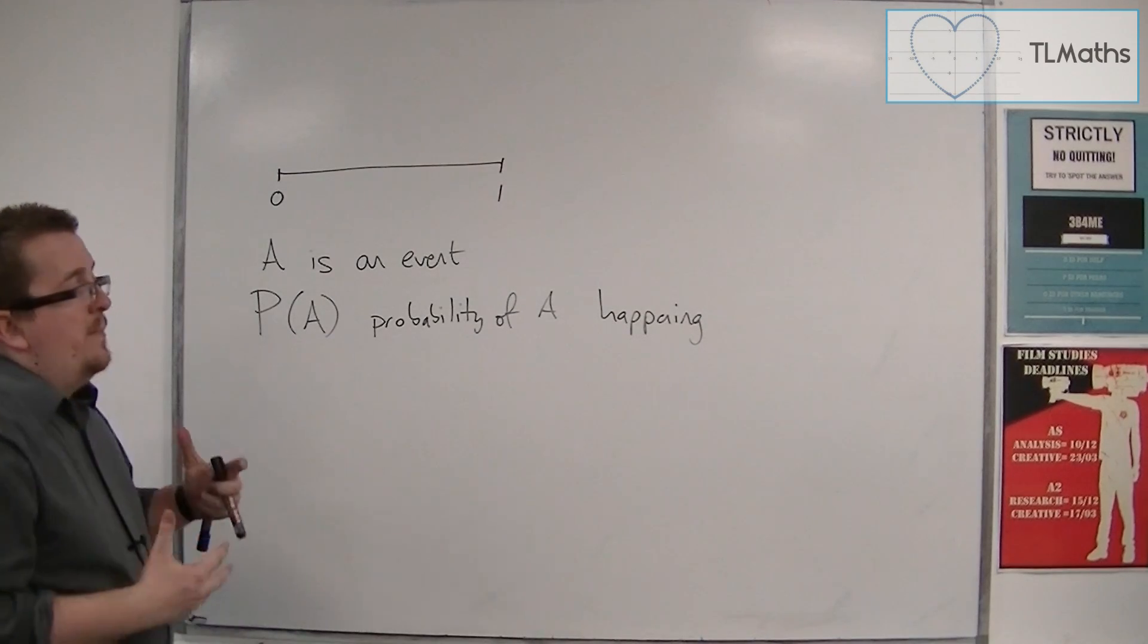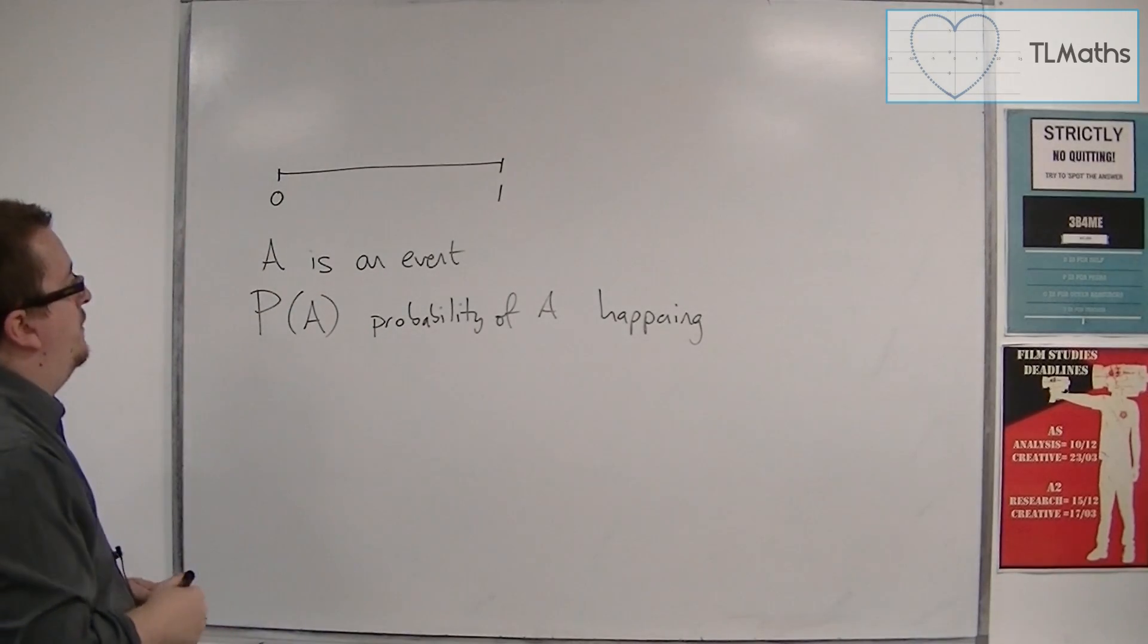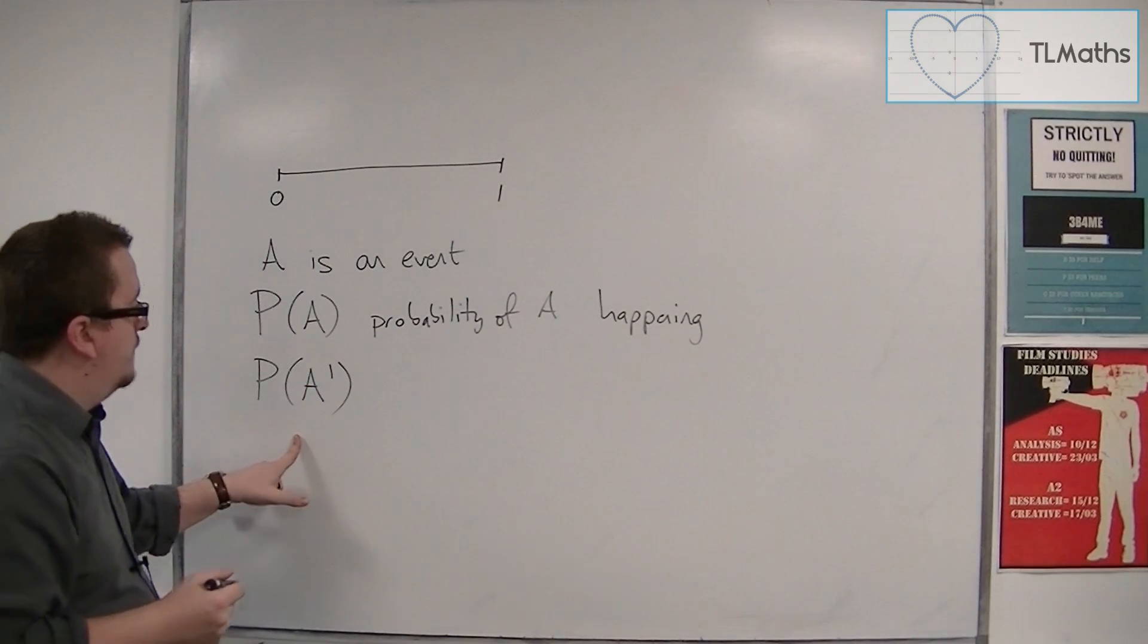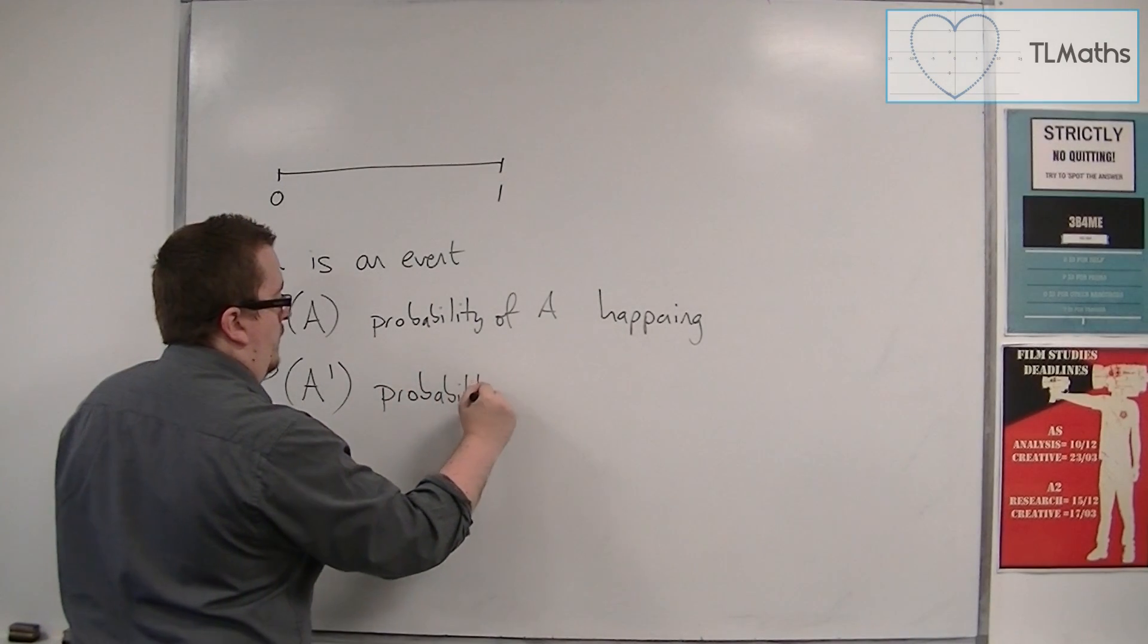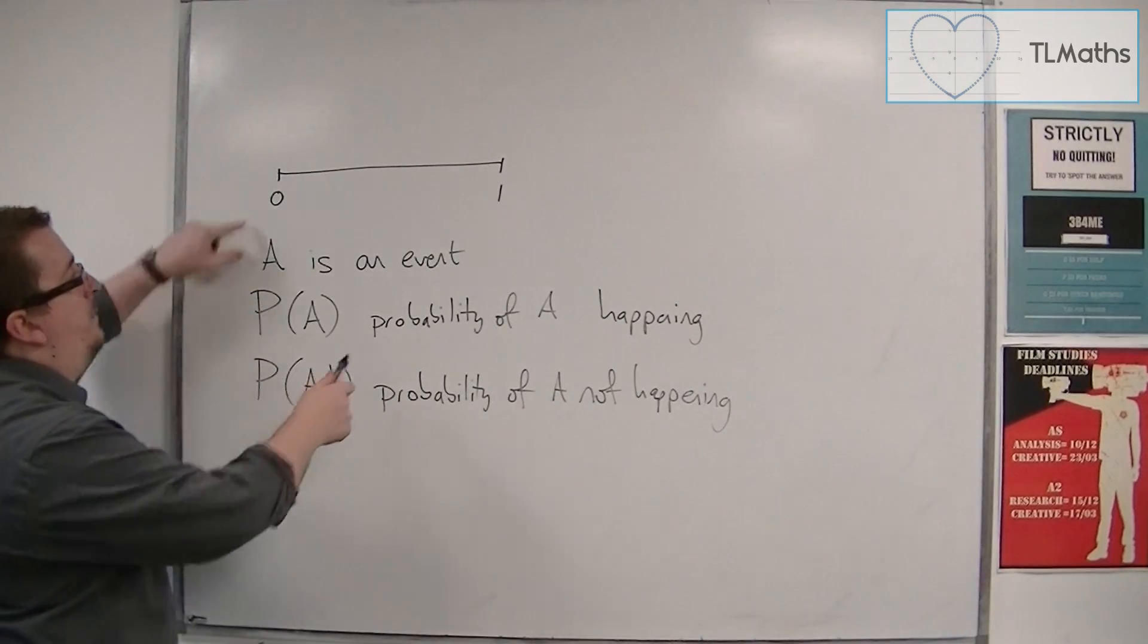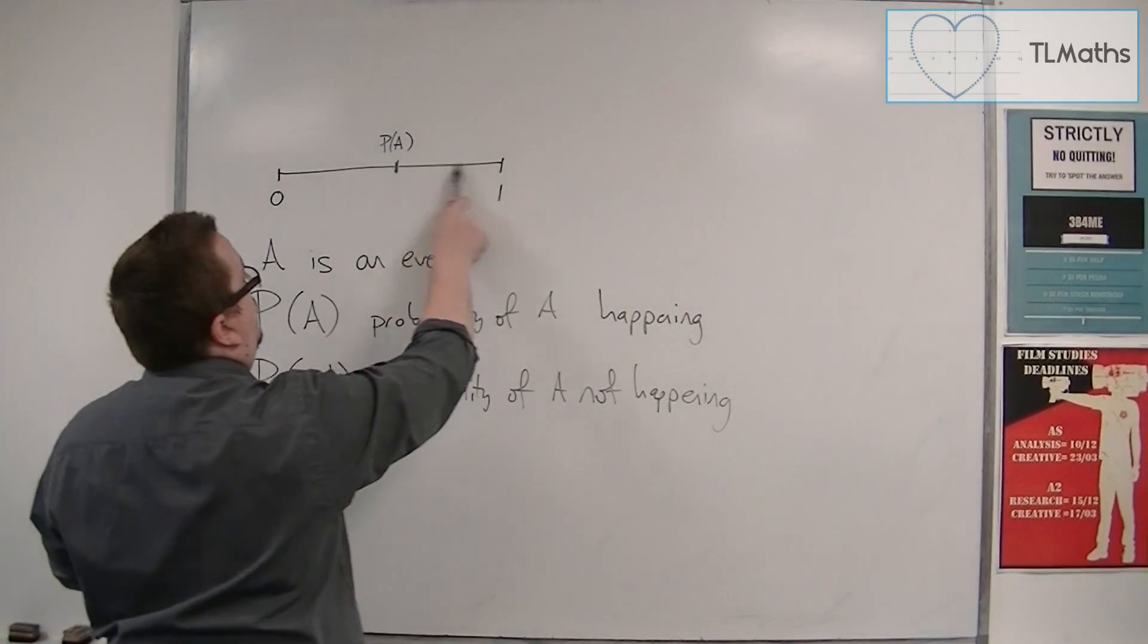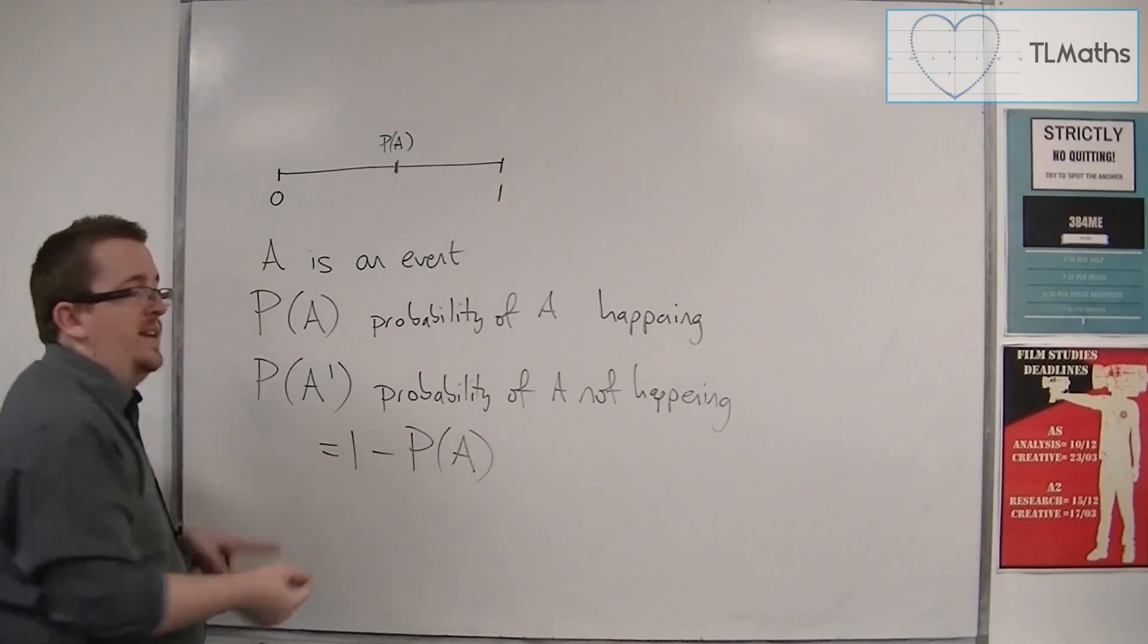So we can then bring about some notation to talk about the probability of event A not happening. So we could say the probability of A not happening, and we're going to use this A prime here. So this is the probability of A not happening. And because the probability of A is some value between 0 and 1, so let's say something like that, then if that's true, then the probability of A not happening is this remaining section. And so it's 1 take away the probability of A. That's how we can calculate it.